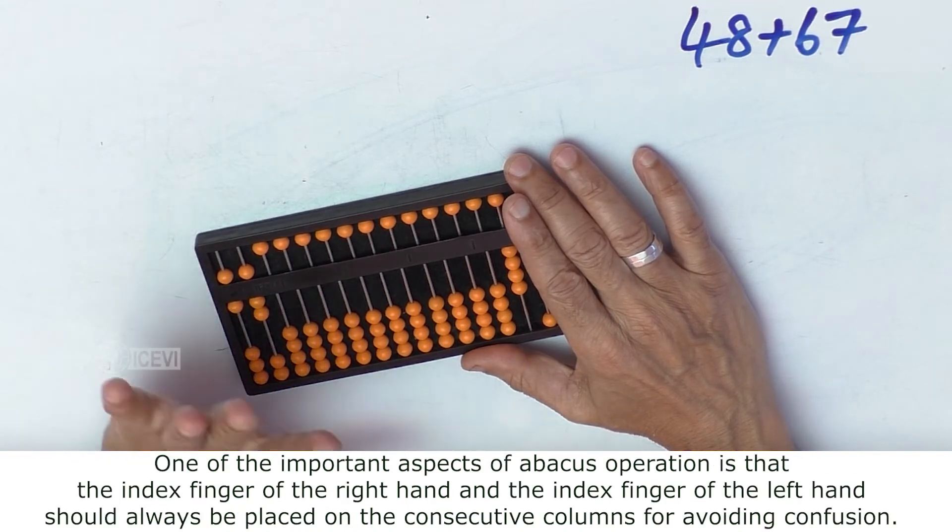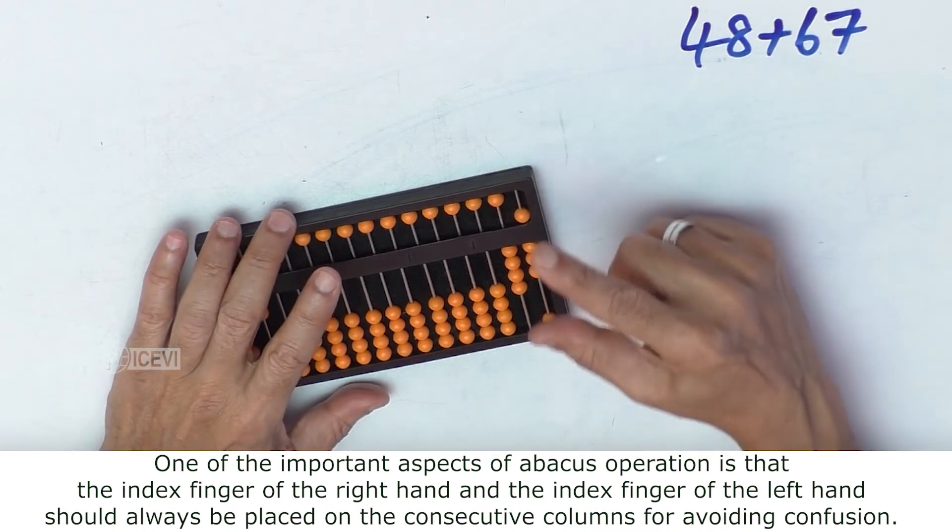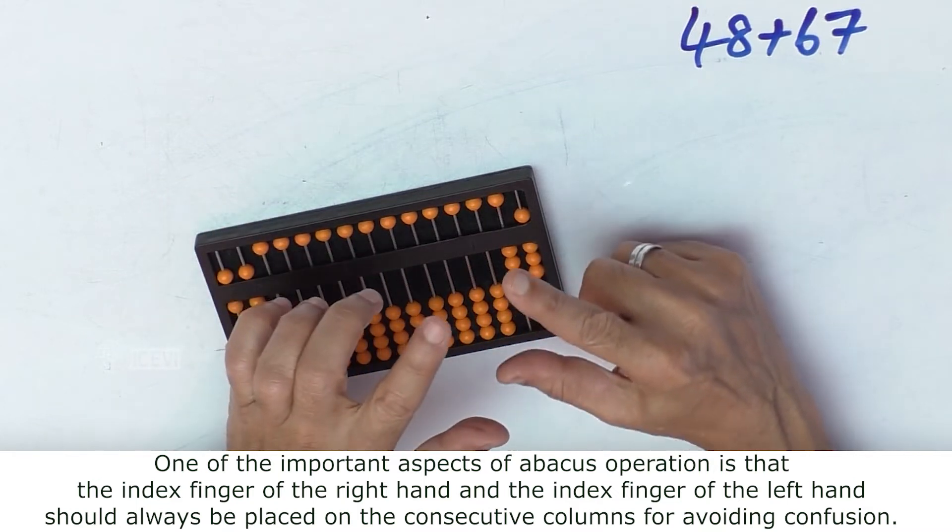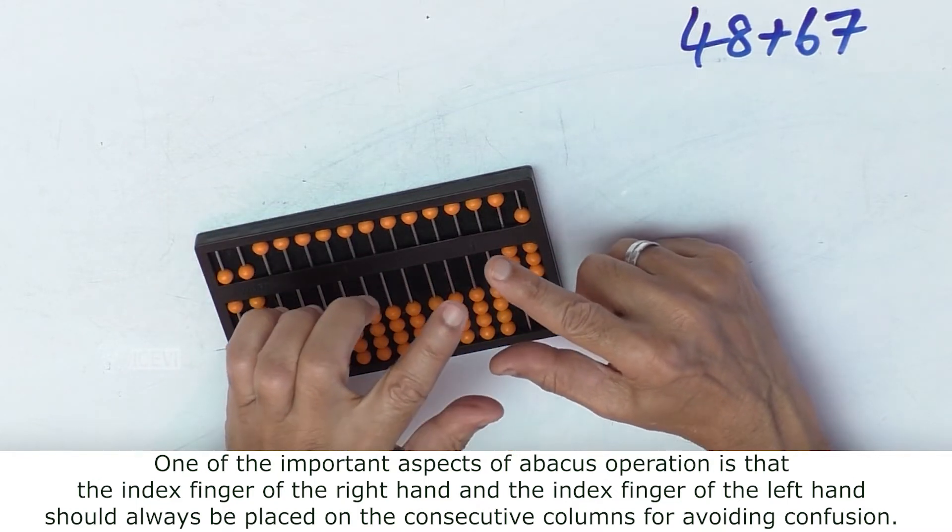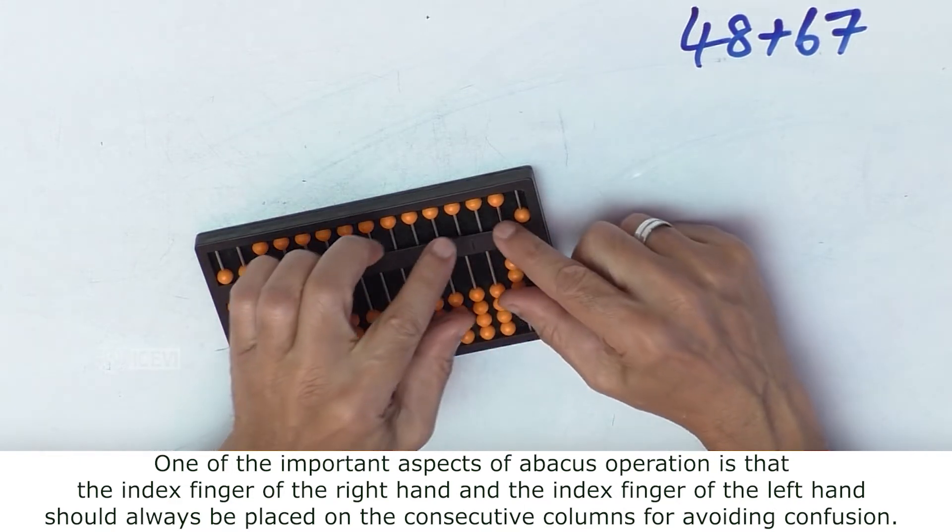One of the important aspects of abacus operation is that the index finger of the right hand and the index finger of the left hand should always be placed on consecutive columns to avoid confusion.